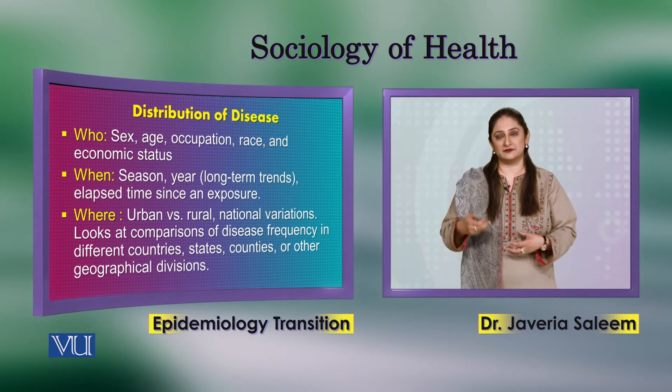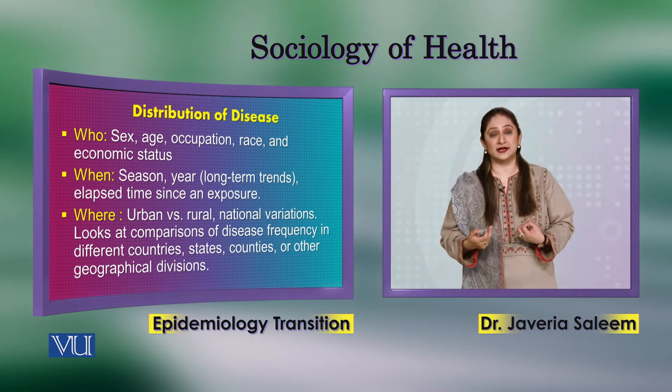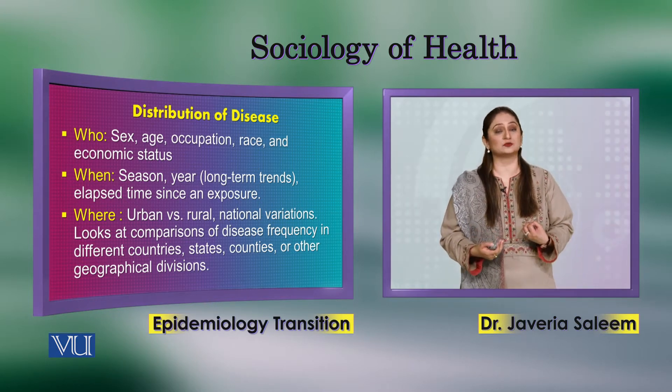For example, during the COVID-19 pandemic in 2019, the WHO created maps to show which continents and countries cases were coming from at any given time. So in epidemiology, we use three key terms to find out the distribution of diseases: who, when, and where.